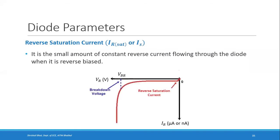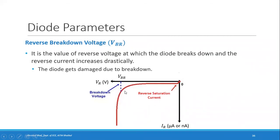The next parameter is reverse saturation current. Whenever the diode is reverse biased, a very small current flows through it due to minority charge carriers. It is almost constant because there are only limited minority charge carriers — even if you increase the voltage, that current does not increase. That small constant reverse current is called reverse saturation current.